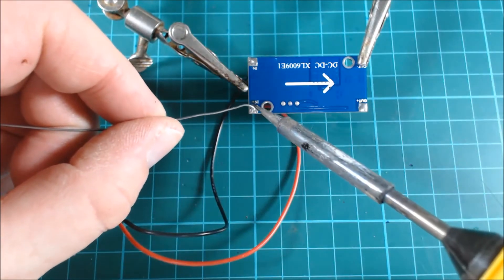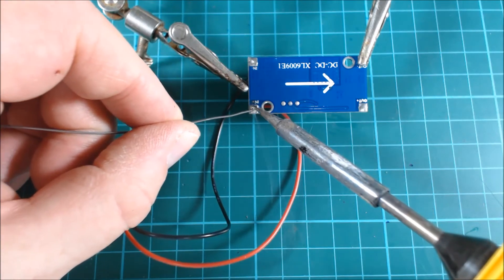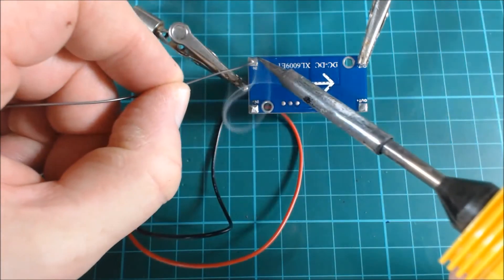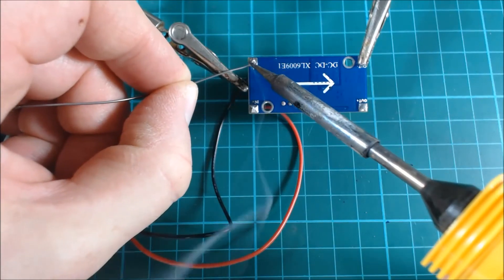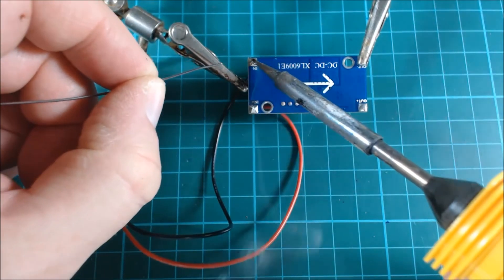Next we need to solder the battery connector to the boost module. The red positive lead from the connector goes to the positive in terminal on the module, and the black negative lead goes to the negative in terminal.